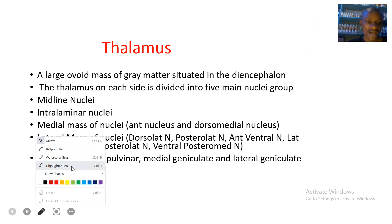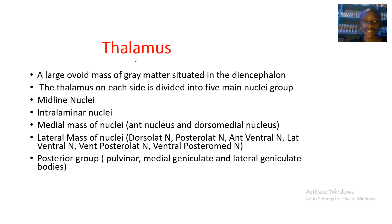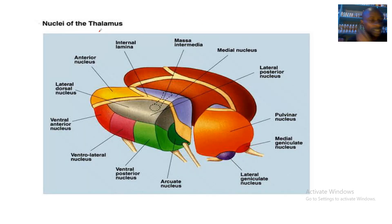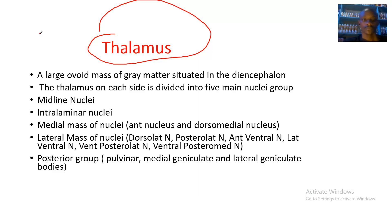Today we'll be having a full lecture on the physiology of the thalamus. These are the diagrams of the thalamus, and what makes the thalamus special is the various nuclei on it. The thalamus is a large ovoid mass of gray matter situated in the diencephalon.